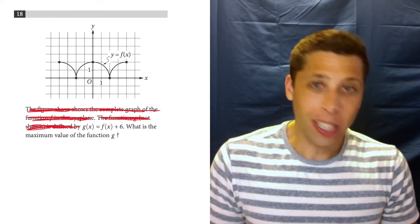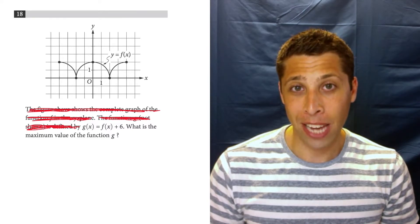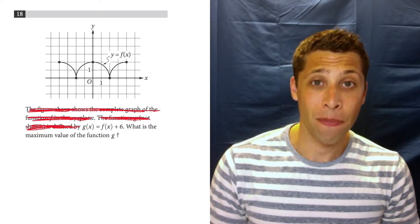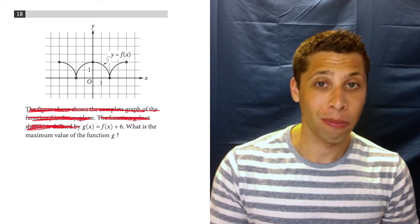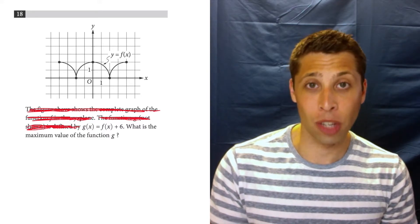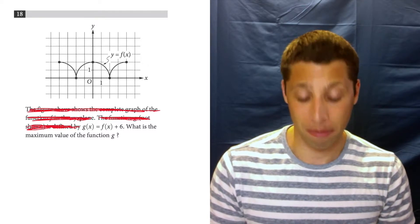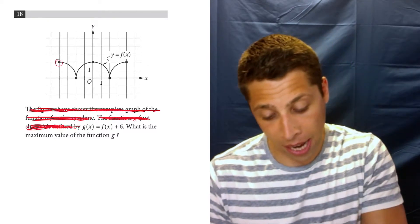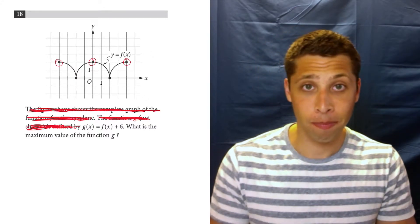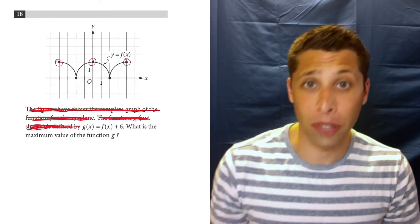Well, you could kind of just know that if we have the maximum of f and we add 6 to it, we're going to get the maximum of g. And there are a bunch of places where we can find the maximum of f. It's any point kind of at the top of the bounces. So the maximum happens multiple times.